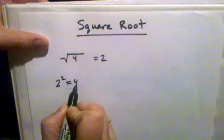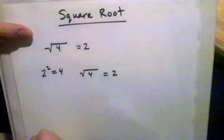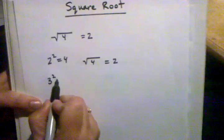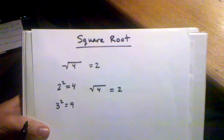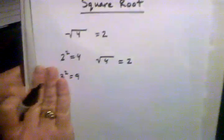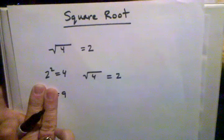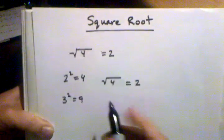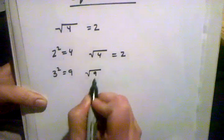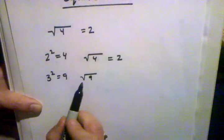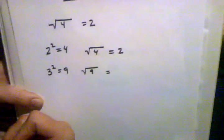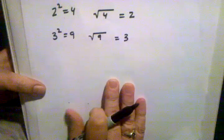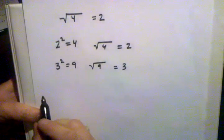Two squared equals four, but the square root of four equals two. Another example: three squared equals nine. So if we work backwards and we're only given the number nine, we want to know what number multiplies by itself two times to get nine. The way we write that question is: what is the square root of nine? And it happens to be three.